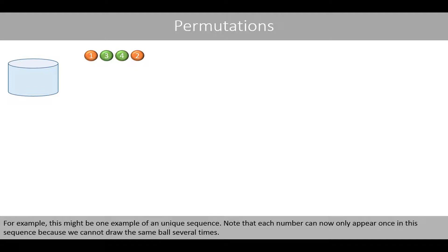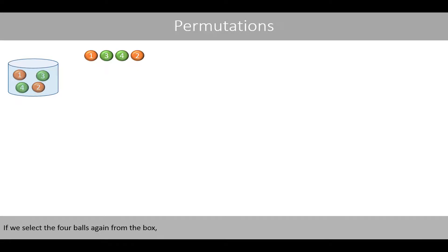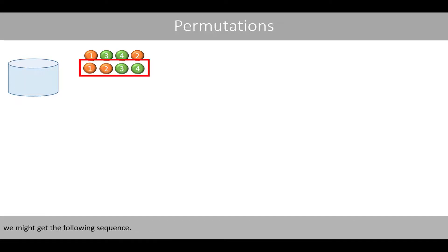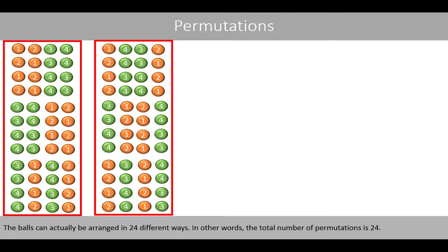For example, this might be one example of a unique sequence. Note that each number can now only appear once in this sequence, because we cannot draw the same ball several times. If we select 4 balls again from the box, we might get another unique sequence. The balls can actually be arranged in 24 different ways. In other words, the total number of permutations is 24.